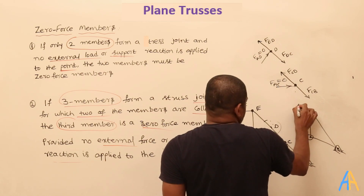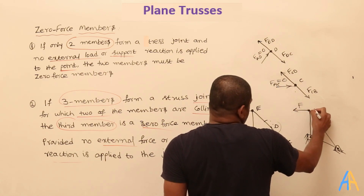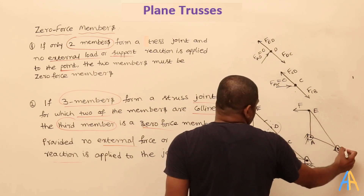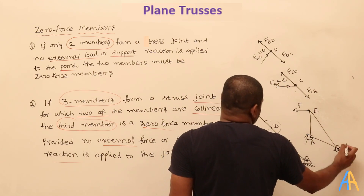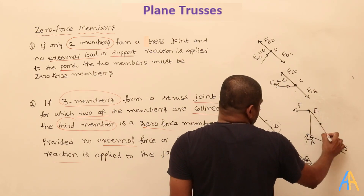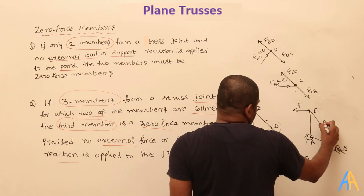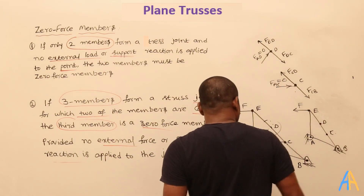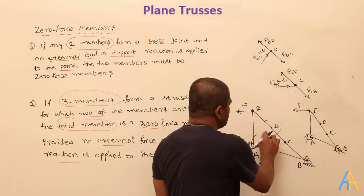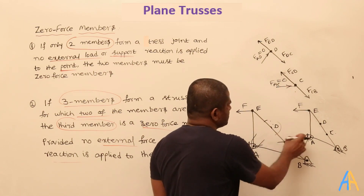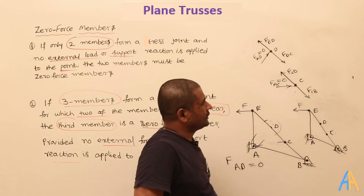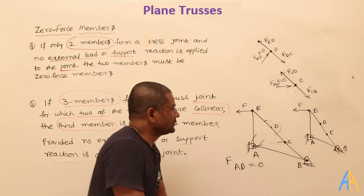The equivalent structure consists of joints E, A, B with point D and point C remaining, but the zero force links have been removed. Instead of using those links, we simply remove them and keep the remaining structure. There is no difference between the original and equivalent structures in terms of force distribution.